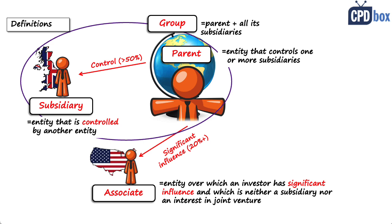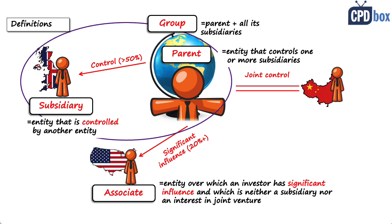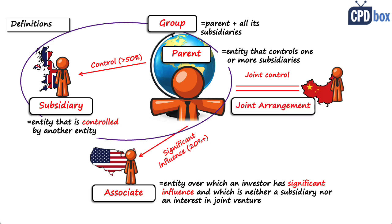There can also be another way of investing and doing business together — having joint control with some other entity over a business, or assets and liabilities. This is called a joint arrangement. IFRS 11 defines it as an arrangement in which two or more parties have joint control.